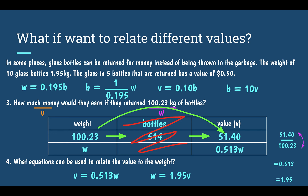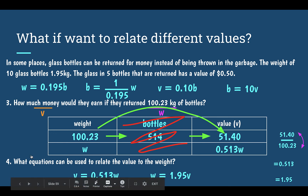Or we could have just left it as W equals 1 over 0.513 times V — just using the fact that they are reciprocals. These don't look like they might be reciprocals, but they are.